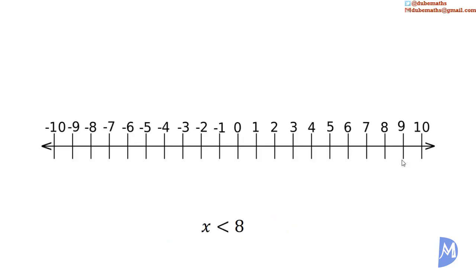The inequality x is less than 8 means that x can have any value less than 8. We show this on a number line. The red arrowed line shows the range of values that x can have. The empty circle at 8 shows that the value 8 is not included.